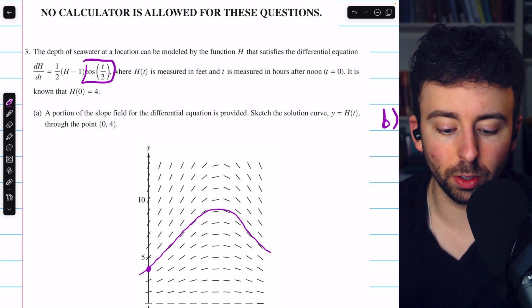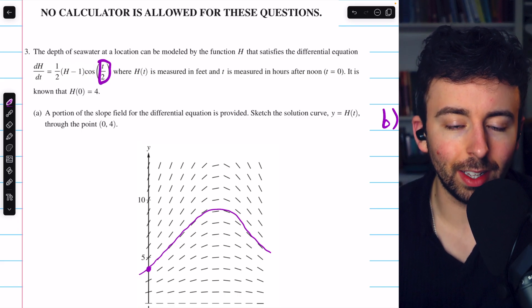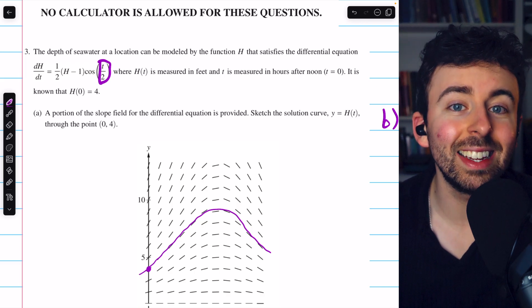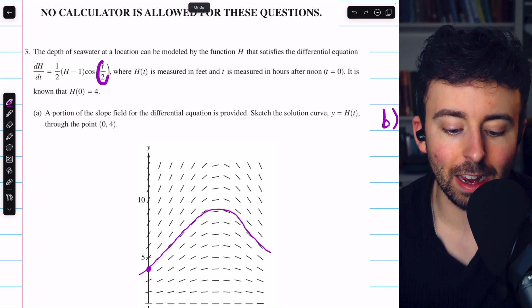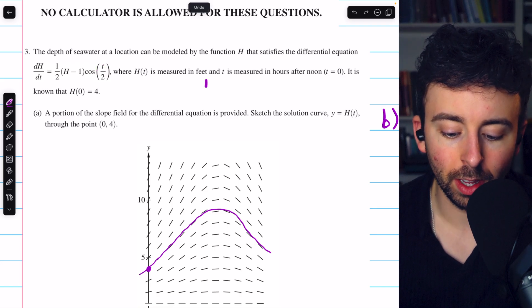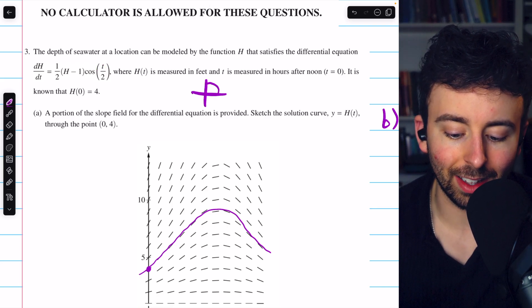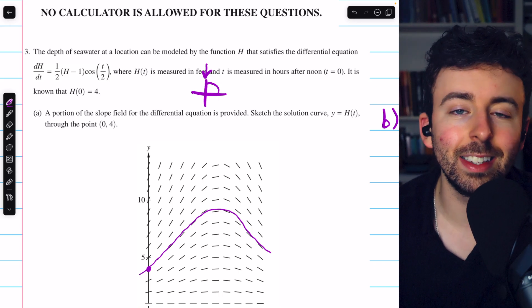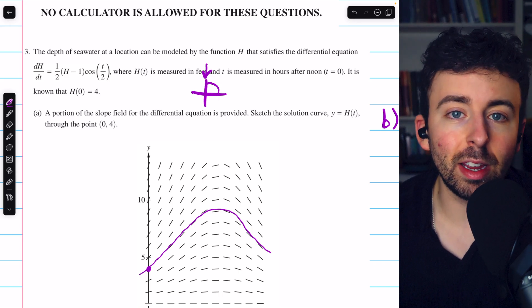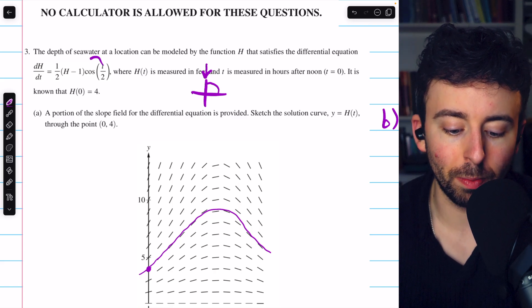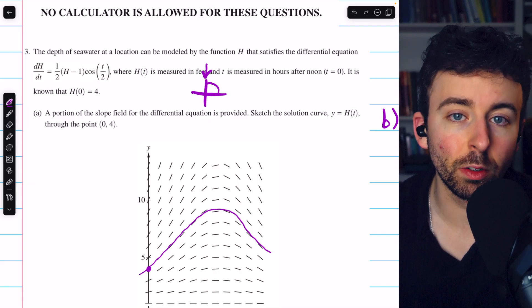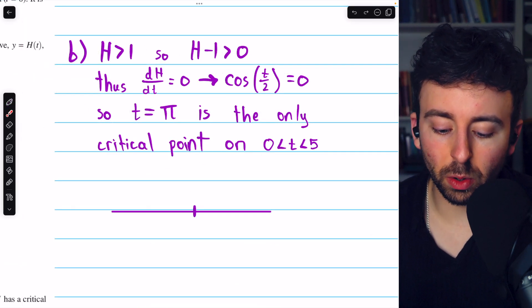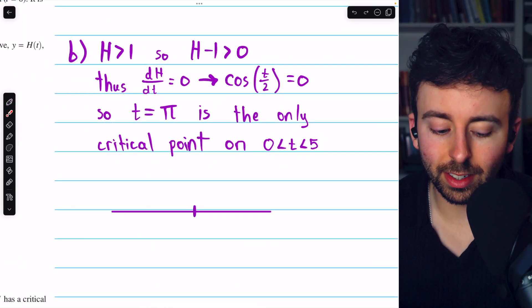Cosine is zero at π/2, and since the input is t/2, this function will be zero when t is equal to π. That way, the input will be π/2. If you think back to the unit circle, that gets us up here, where the x-coordinate cosine is zero. So it's at t equals π. There are, of course, infinitely many other values of t that would make this equal to zero, but that's the only one that's in the interval between zero and five. The only critical point on the interval is at t equals π.